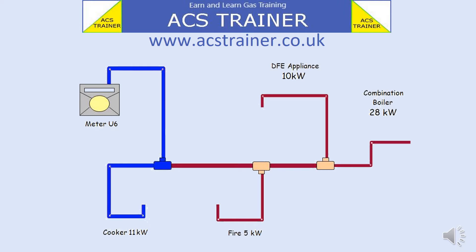We need to know how many sections there are maximum to an appliance. As can be seen, to the cooker there are two sections. The meter to the tee is one section and the tee to the cooker is the second section — two sections in total. These are shown in blue.